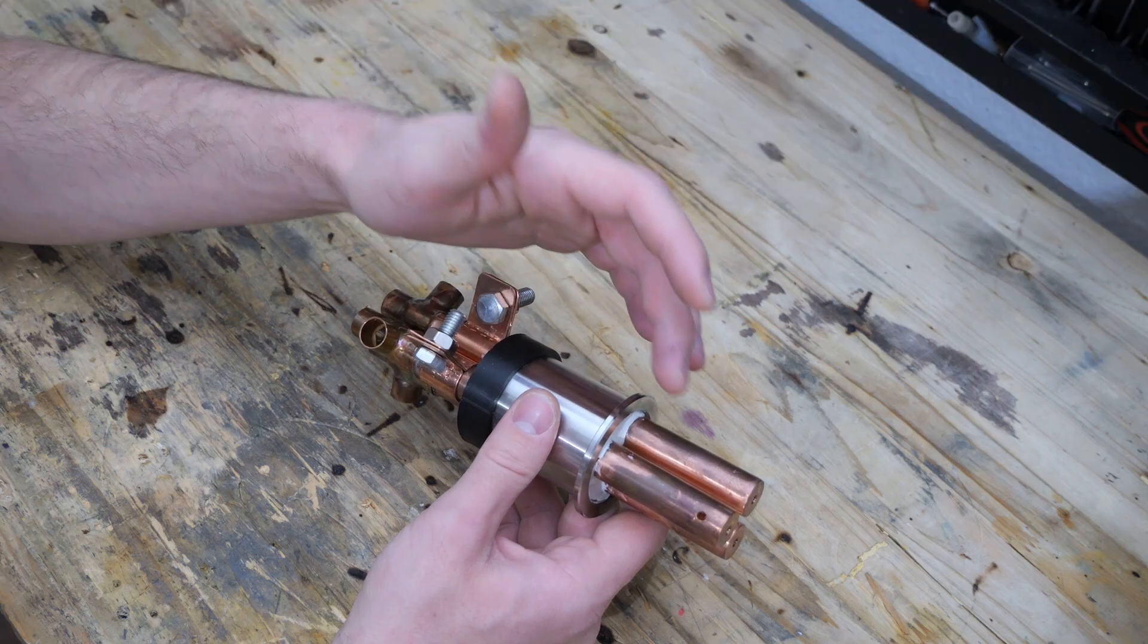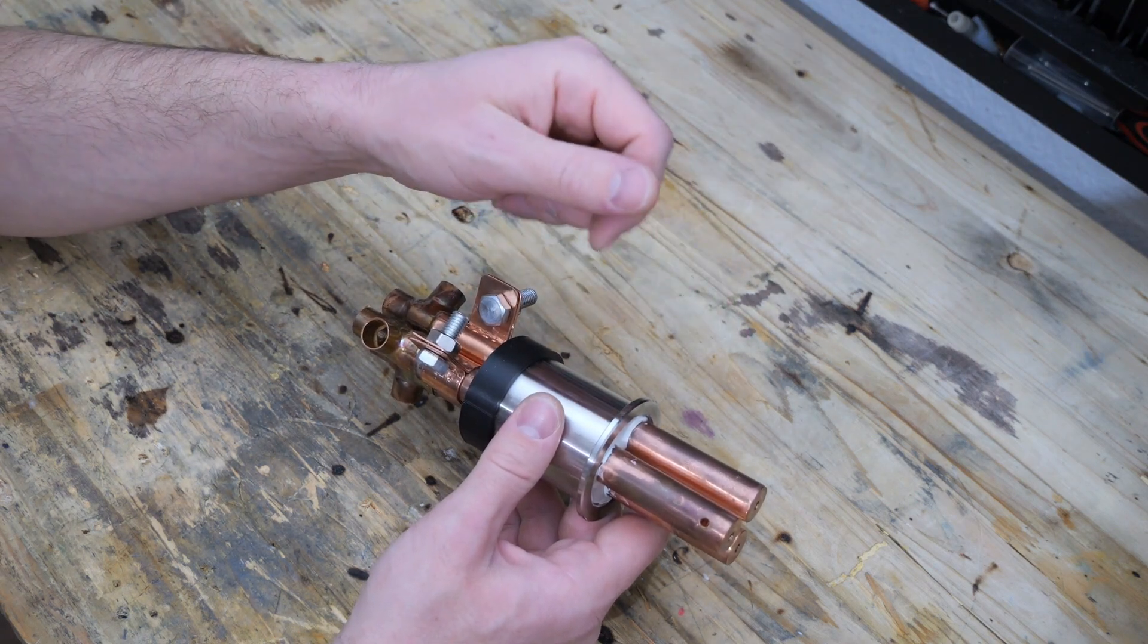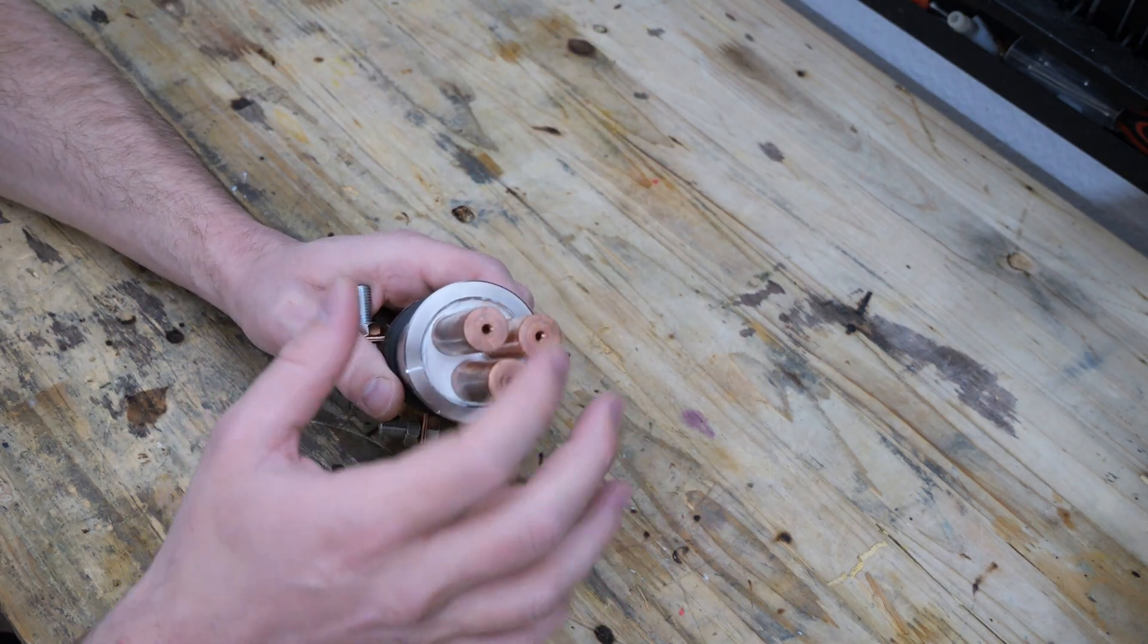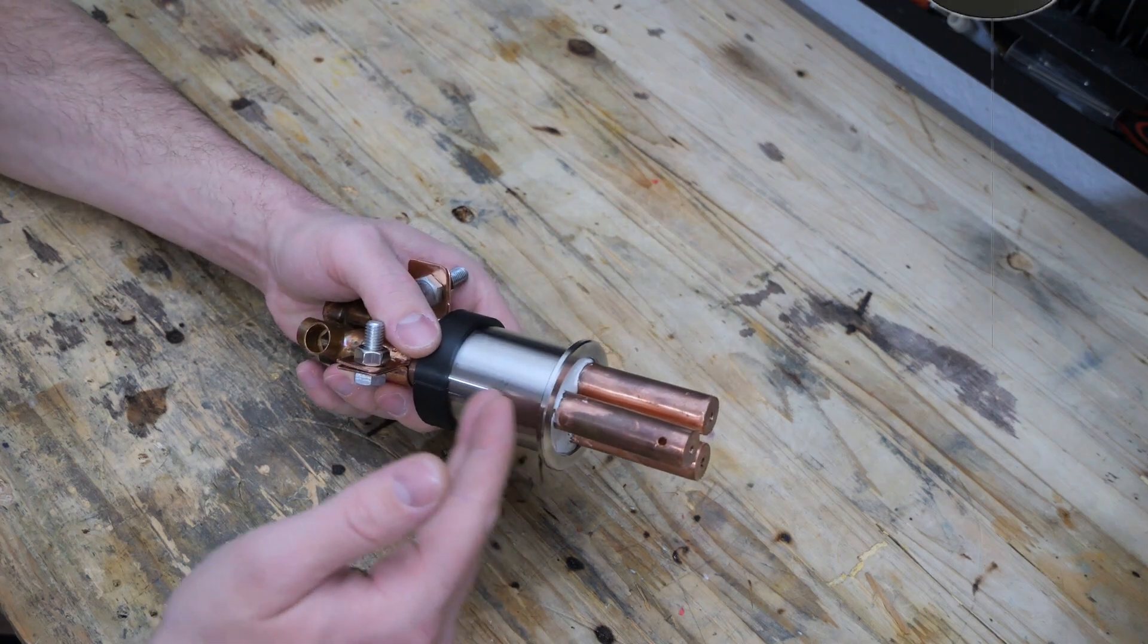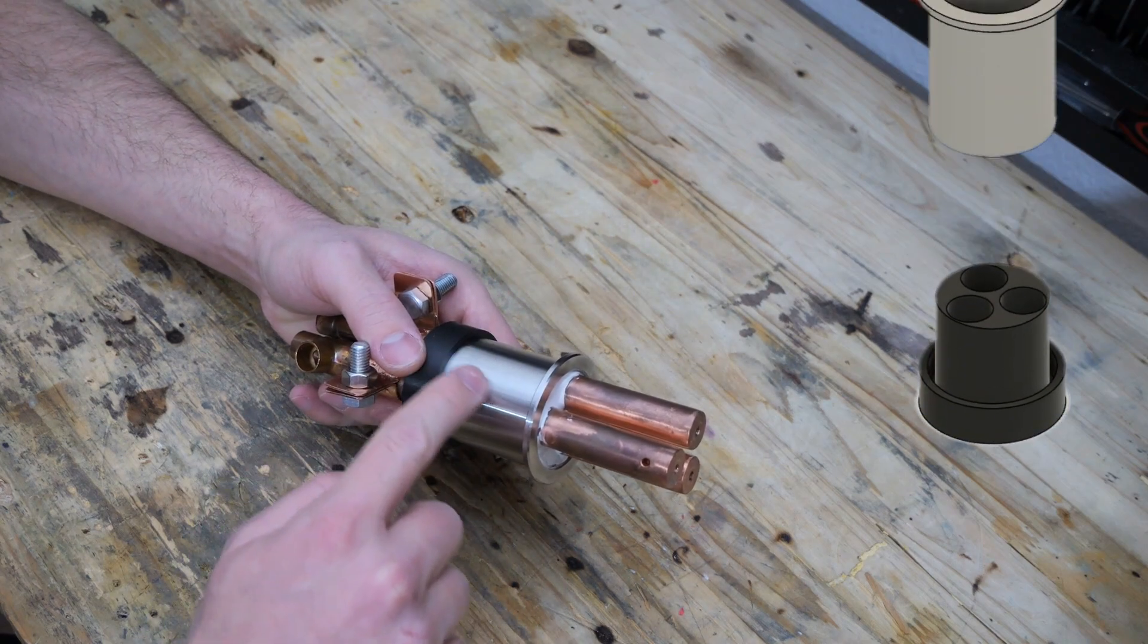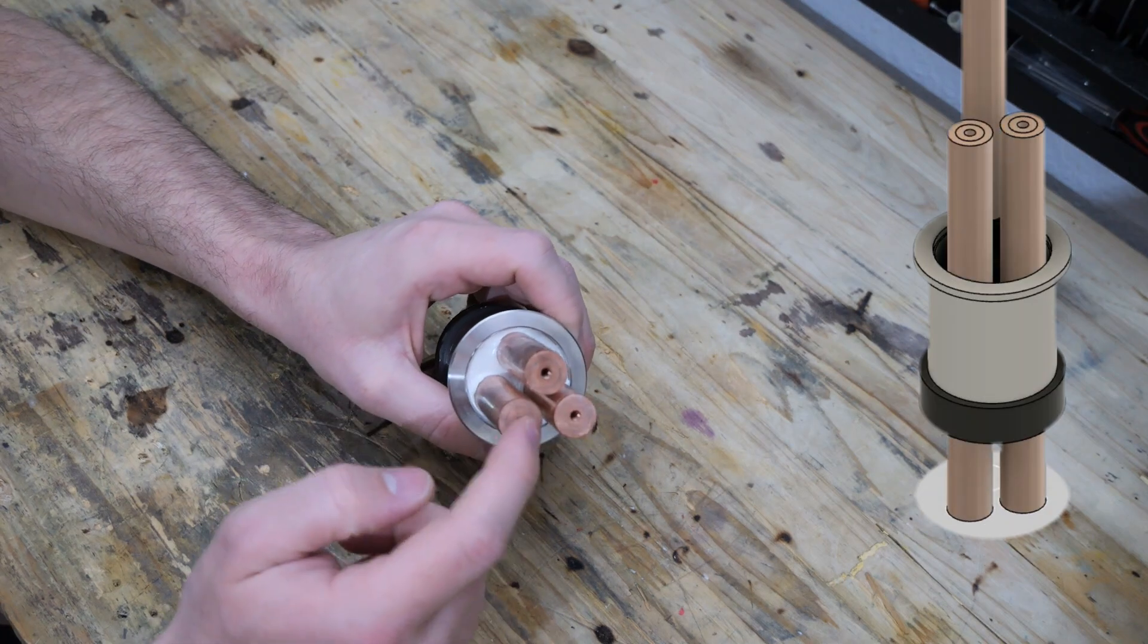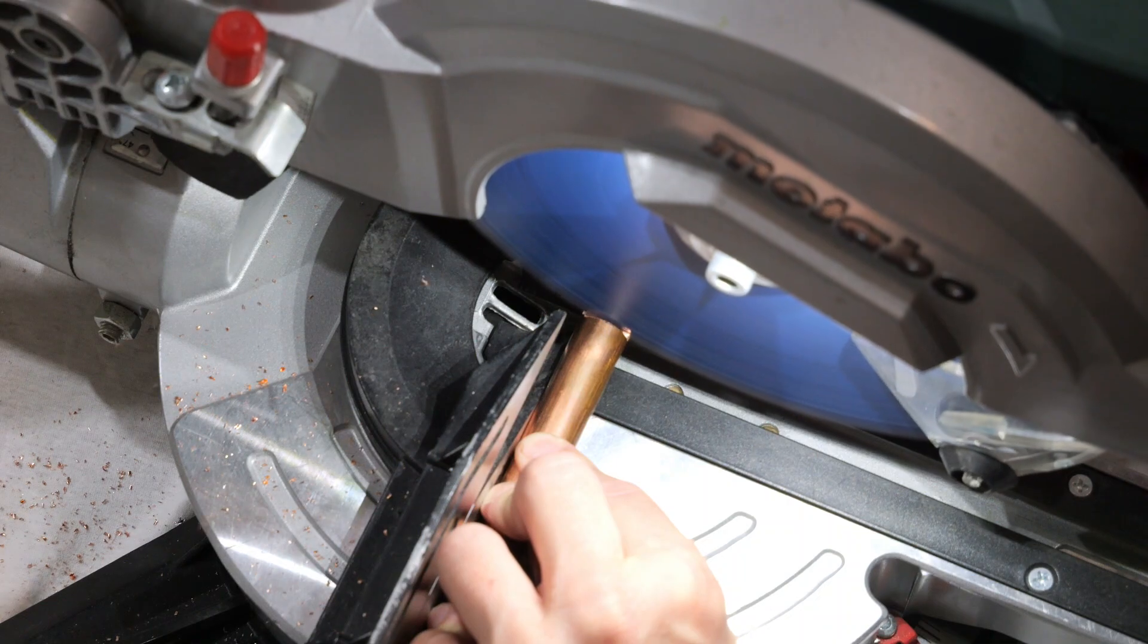But if you're interested in thermal evaporation and especially optics, you should really check out his channel, you can find it in the video description. In his video he used a design with three conductors to be able to evaporate two different metals. And that's why I made this version too, which consists of a KF40 flange and these three conductors. These here are not actually copper rods, they are 16mm copper tubes with a 4mm wall thickness.